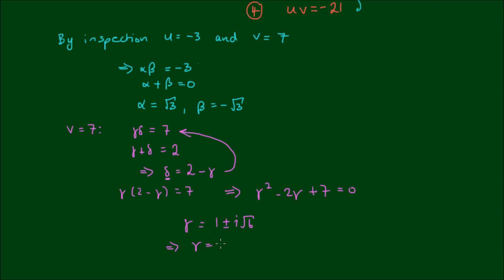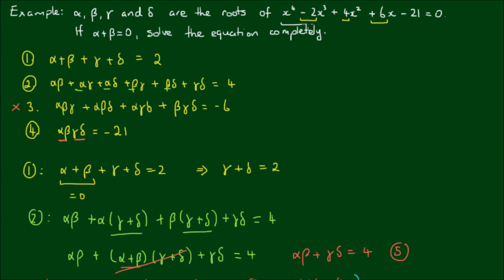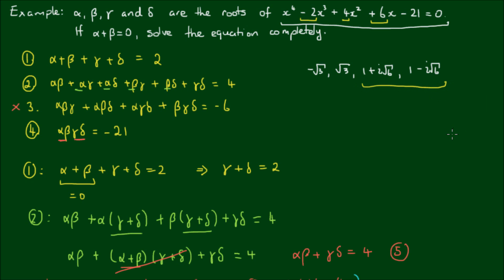So gamma equals 1 plus i·root(6) and delta equals 1 minus i·root(6). The four roots of our equation are negative root 3, positive root 3, 1 plus i·root(6), and 1 minus i·root(6). This also demonstrates the theorem that for a polynomial with real coefficients, complex roots exist as conjugate pairs.